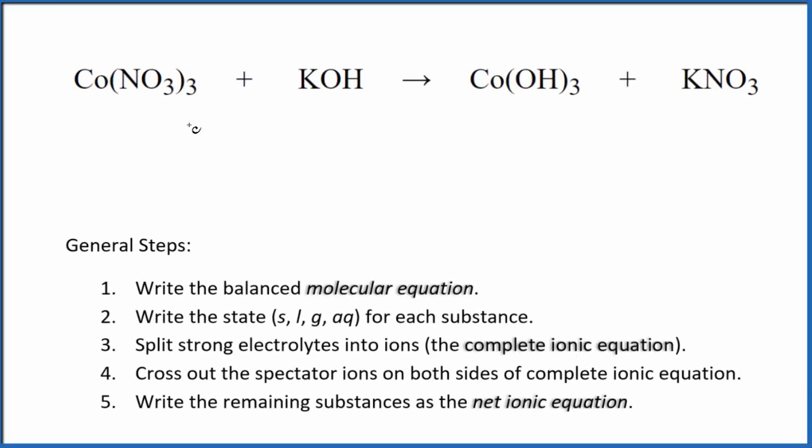Let's write the balanced net ionic equation for Co(NO₃)₃ plus KOH. This is cobalt 3 nitrate and we have potassium hydroxide. With net ionic equations, the first thing we need to do is balance the molecular equation. This is the molecular equation.